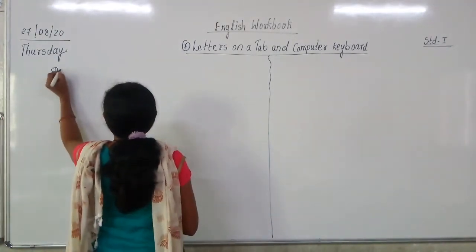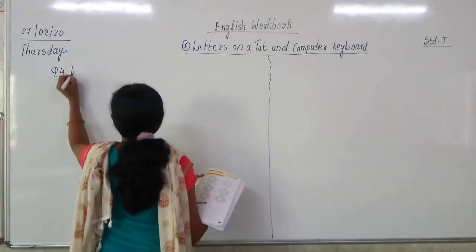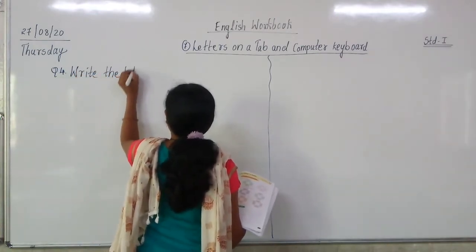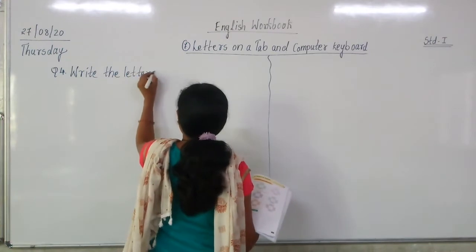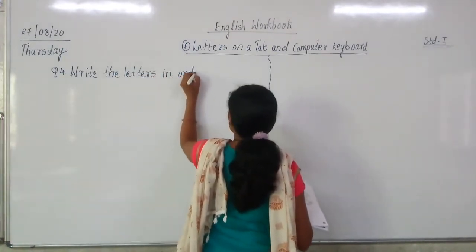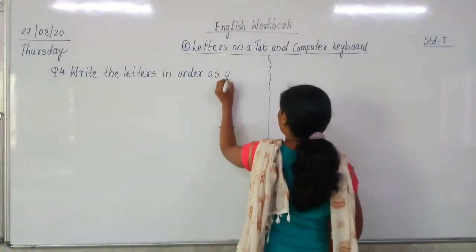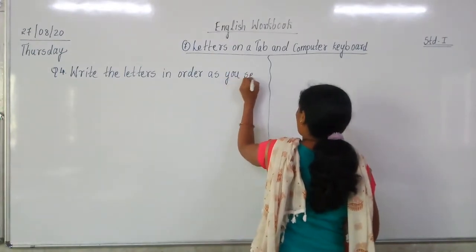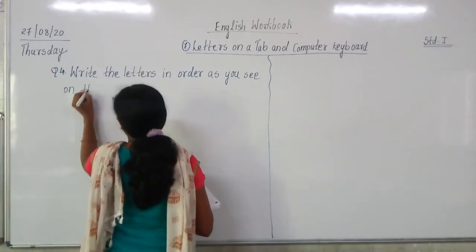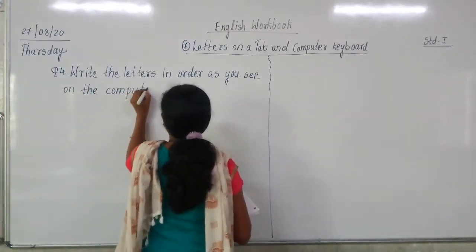Let us start writing. Question number 4: Write the letters in order as you see on the computer keyboard.